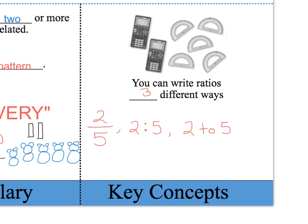So those are the three different ways to write a ratio: as a fraction, with a colon, and with the word 'to.'